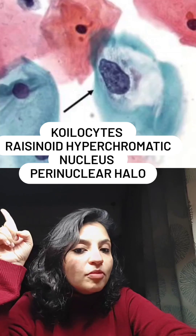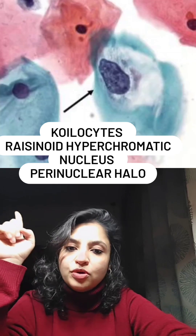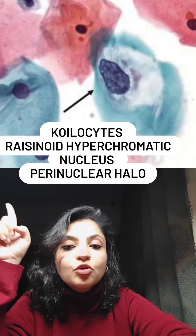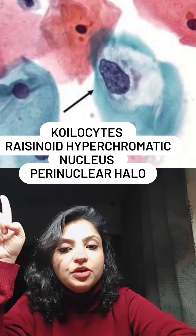The morphological hallmark of HPV is the koilocyte, which is a hyperchromatic nucleus with a perinuclear halo. This koilocytic change is induced by E4, and some studies say that E5 and E6 together induce this perinuclear halo.